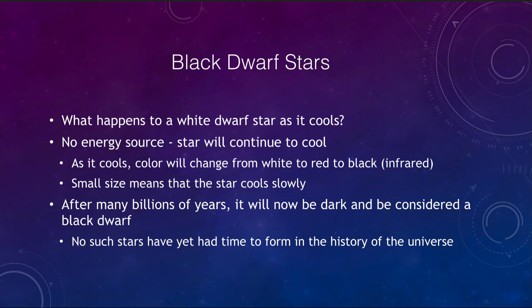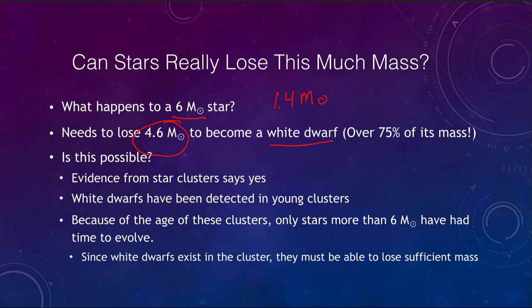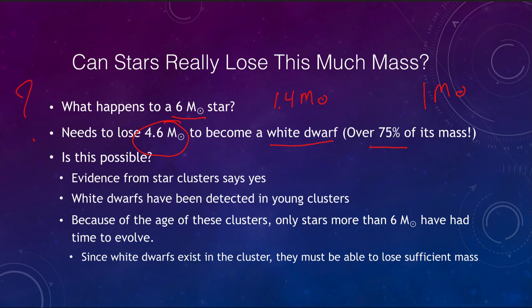Can stars really lose enough mass to be able to become white dwarfs? For a six solar mass star, that means it needs to lose 4.6 solar masses worth of material in order to become a white dwarf — otherwise it will be over the 1.4 solar mass limit and electron degeneracy pressure will not be able to hold it up. It essentially has to lose 75 percent of its mass. For something like our Sun, this is no big deal — it is by definition one solar mass, so it doesn't have to lose any mass at all and would still become a white dwarf star.